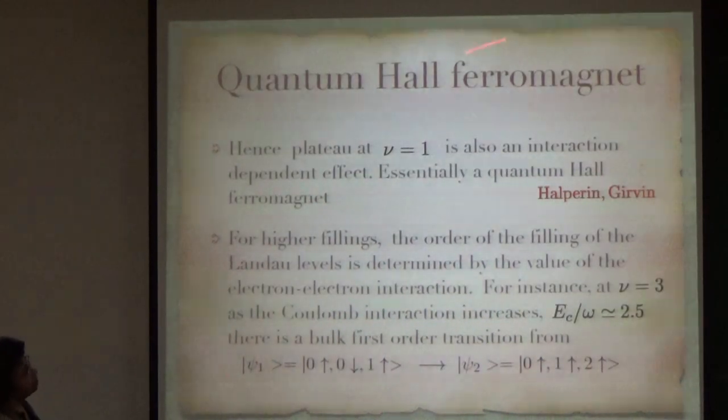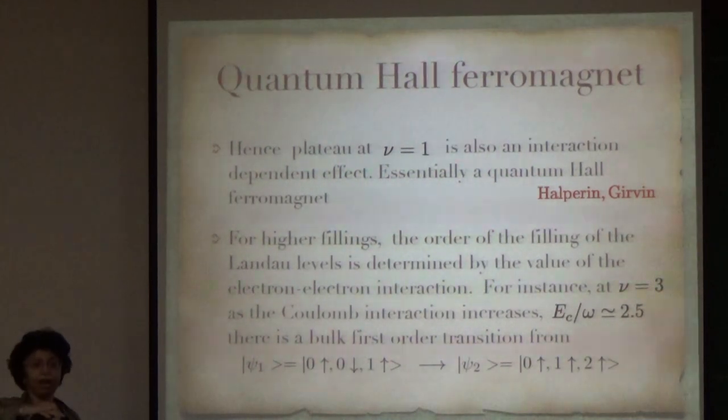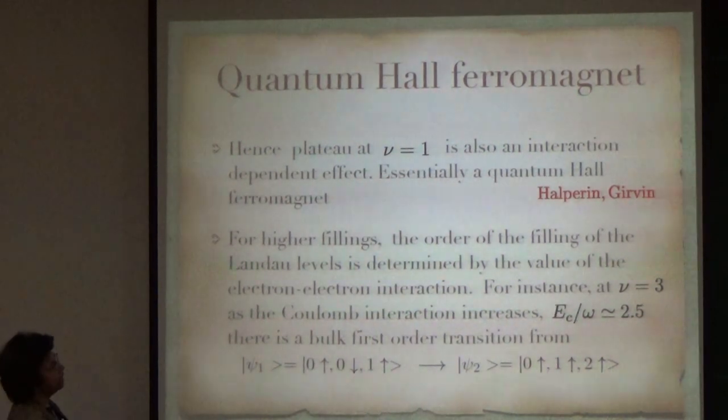The point I want to make here is that Coulomb interaction can change the order of Landau levels. Essentially, the plateau at ν = 1 is actually also an interaction dependent effect. It is a quantum Hall ferromagnet. Because of Coulomb interactions, the up spin electron energies become lower than the down spin electron energies. Once all the up spin gets filled, you get a plateau and that is what is called a quantum Hall ferromagnet.